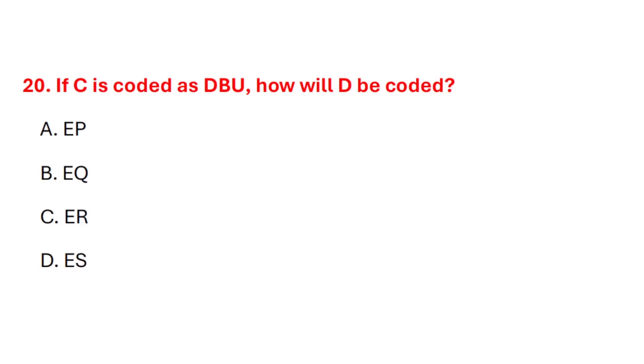Question 21 (coding). If C is coded as D, B as U, how will D be coded? Correct answer is option A: EP.